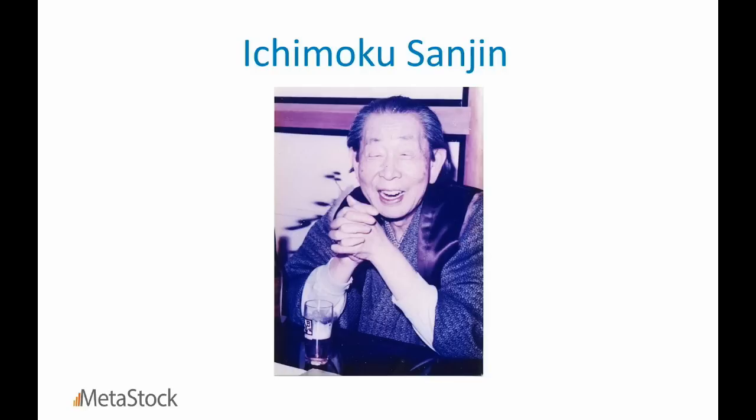I also want to talk a little bit about Goichi Hasada — this is the only picture I could find on Google for him. He also went by Ichimoku Senjin, which translated roughly means 'what a man from the mountain sees' — or a view from above, view from a distance, basically equilibrium at a distance.